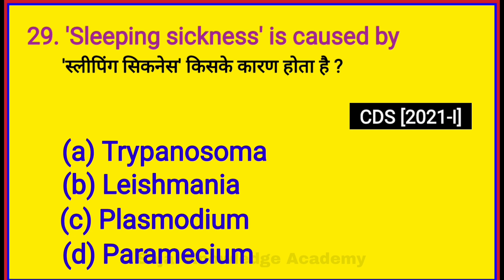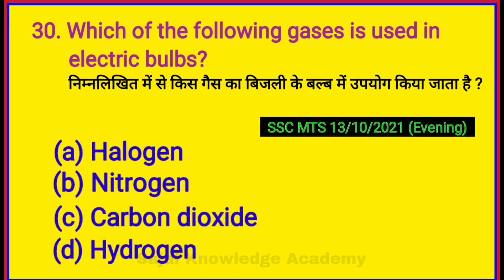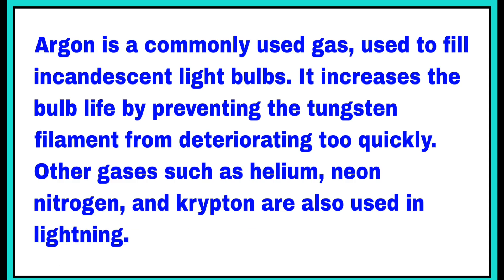Sleeping sickness is caused by? Option A: Trypanosoma. Which of the following gases is used in electric bulbs? Option B: Nitrogen.